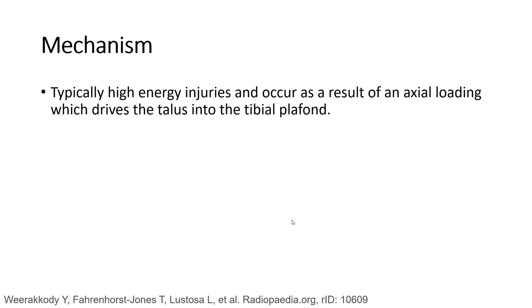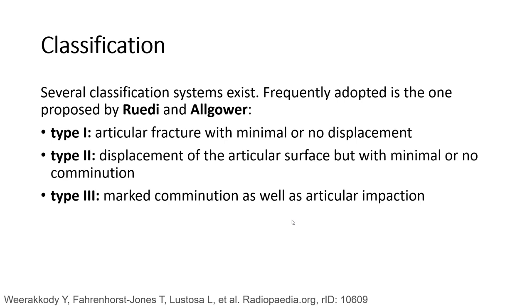Several classification systems exist. A frequently adopted one was proposed by Ruedi and Allgower. Type 1 is an articular fracture with minimal or no displacement. Type 2 involves displacement of the articular surface but with minimal or no comminution. Type 3 involves comminution as well as articular impaction.